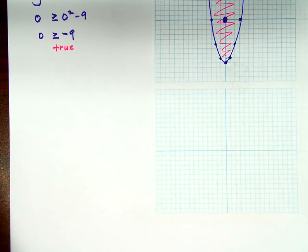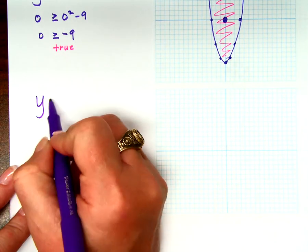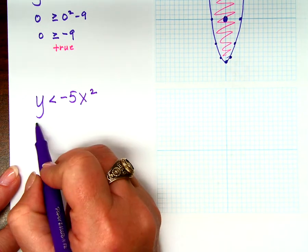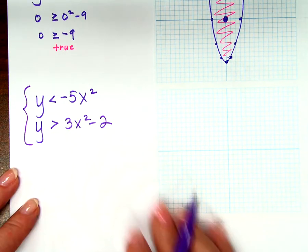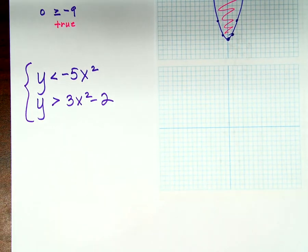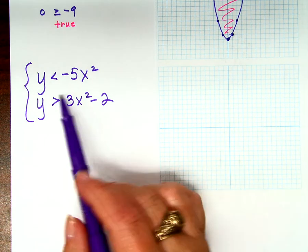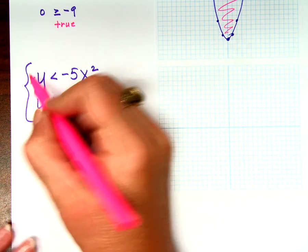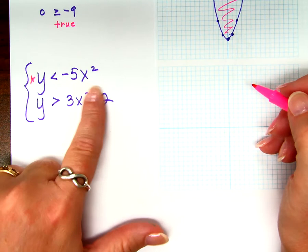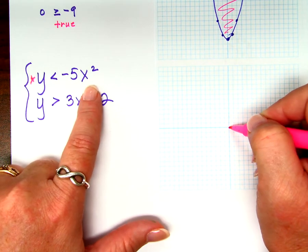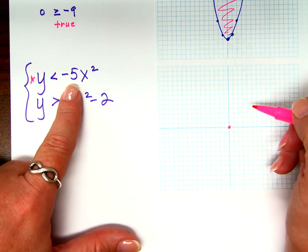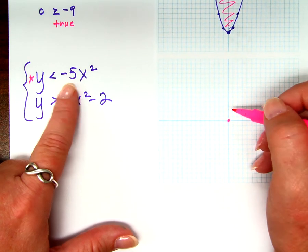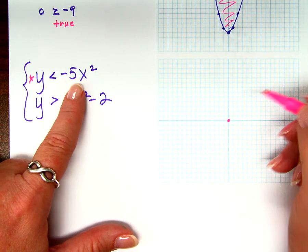What if the problem has two inequalities — y is less than negative 5x squared, and y is greater than 3x squared minus 2? There are two of them now. Do we panic? No, that's rule number one: don't panic. We just graph them one at a time. I'm going to graph the first one in pink. Does it move up or down at all from the origin? It does not. Is it parent function shape? No, because it has a multiplier. Does it open up or down? It opens down because of the negative.